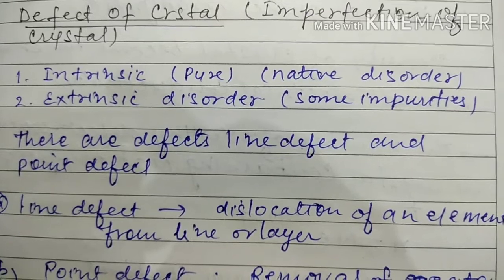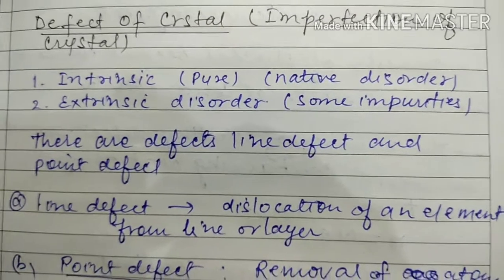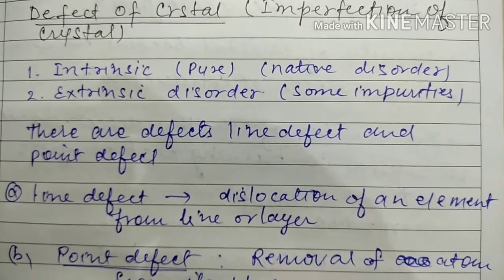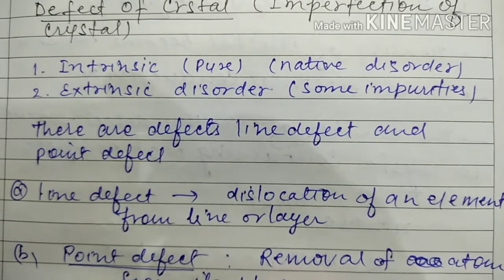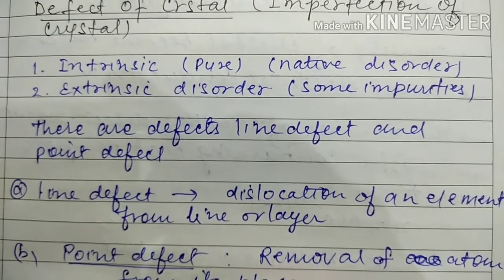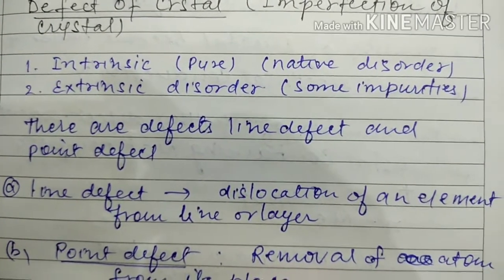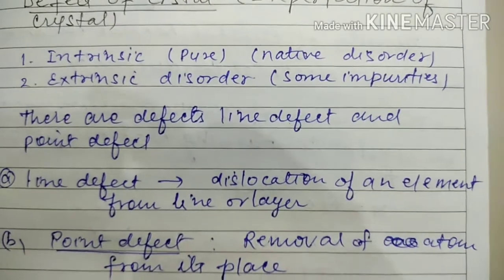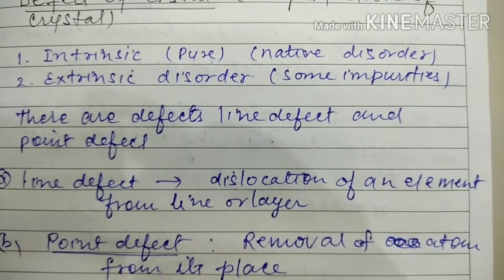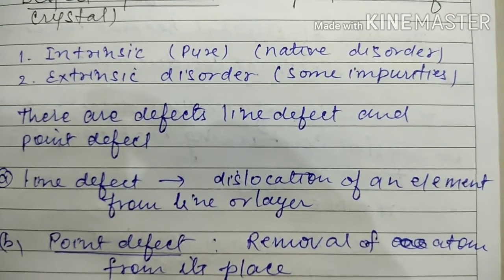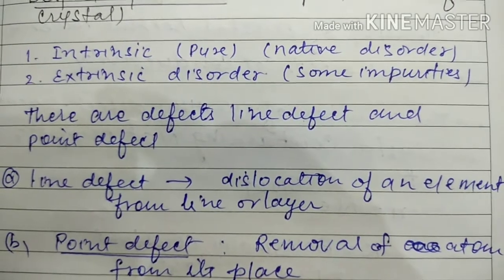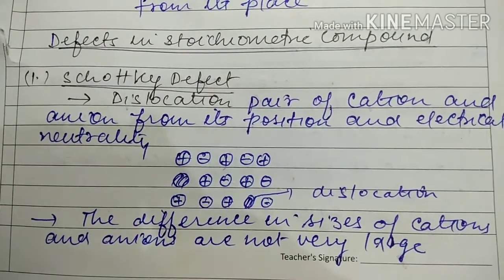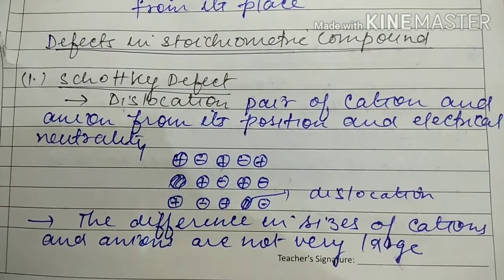In a line defect, there is dislocation of an element from a line or layer — this is called a line defect. A point defect involves the removal of an atom from its lattice site or place.